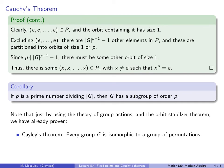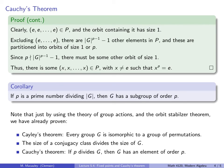Every group G is isomorphic to a group of permutations. Secondly, the size of a conjugacy class divides the size of the group. And Cauchy's theorem.